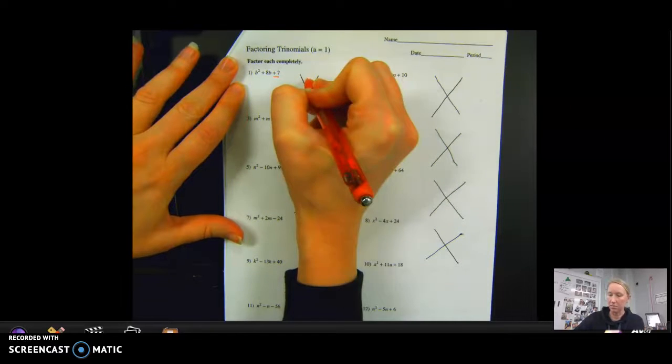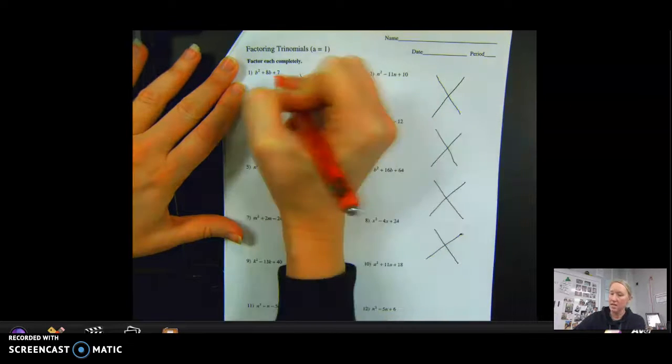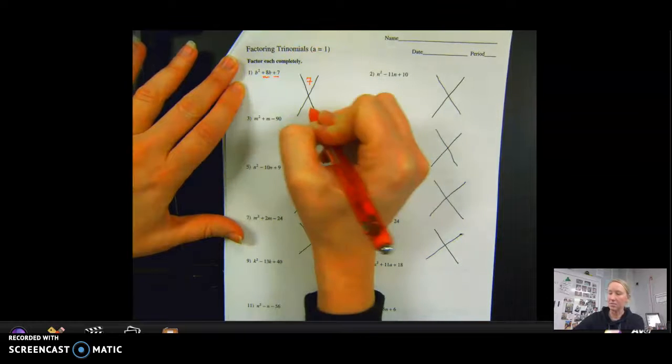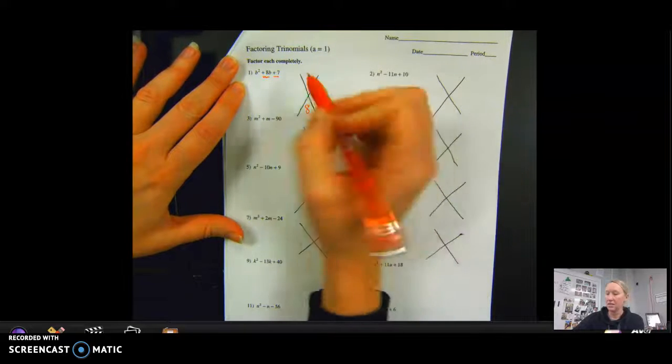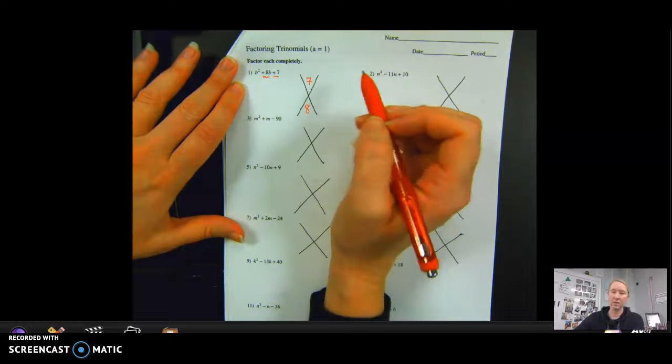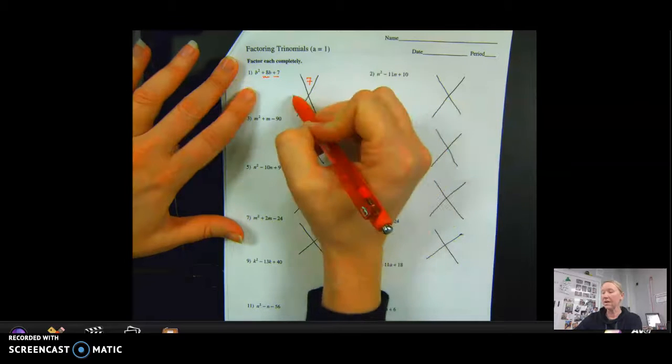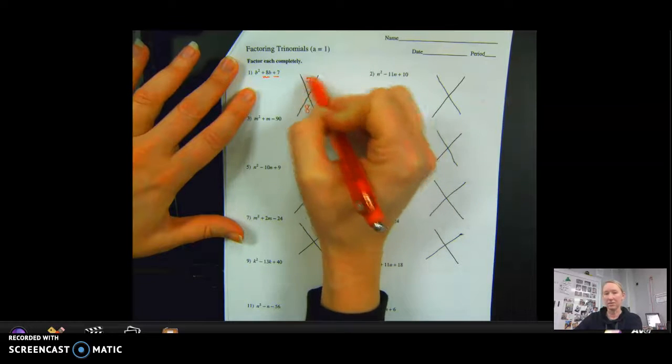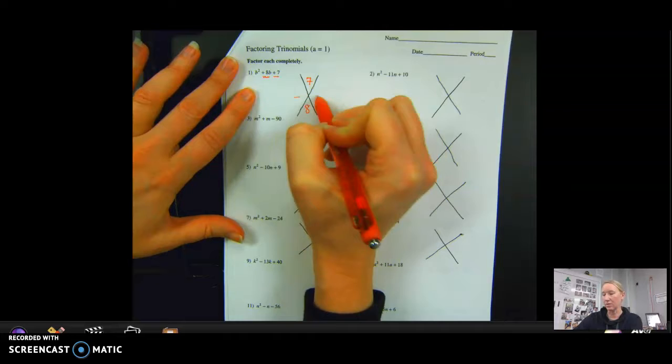the answer of the multiplication goes on the top. So that is your last number, so we want to multiply it to equal 7. And then the number we want to add to goes to the bottom, and that's an 8. This is a positive 7 and a positive 8. So now I need to start thinking of my factor pairs of 7, because these two numbers have to multiply